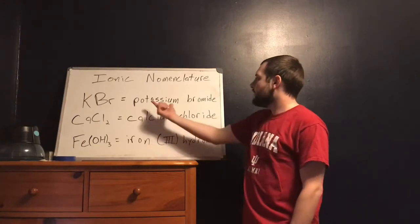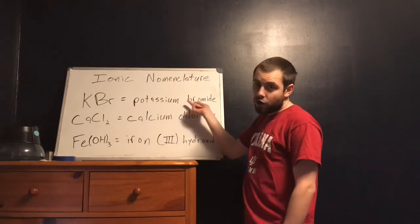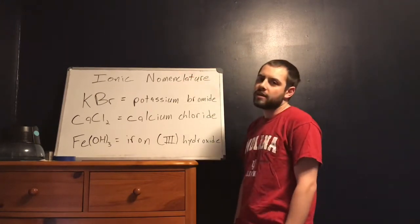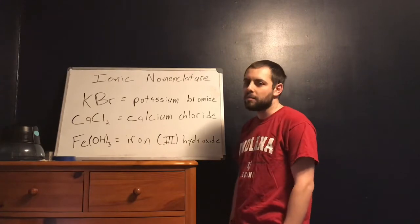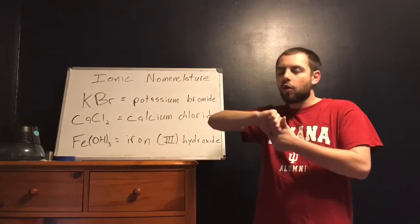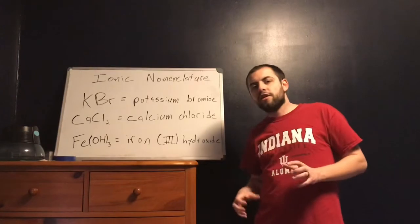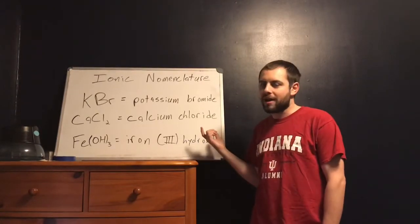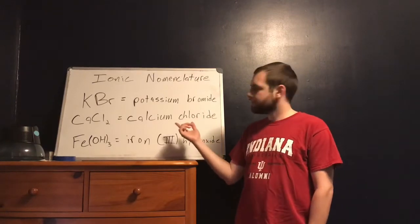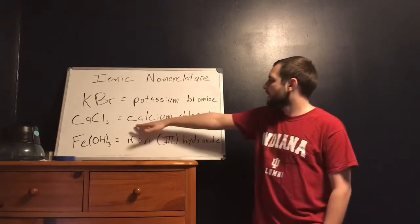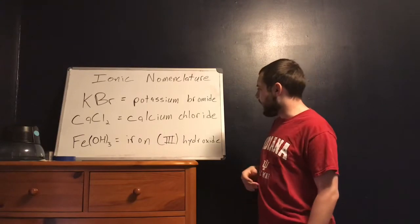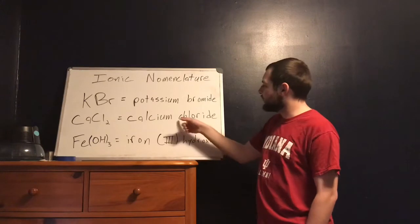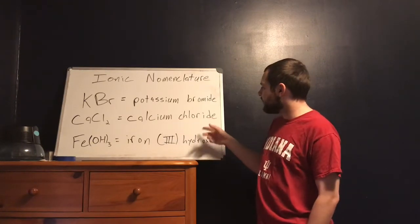If this had been potassium monobromide — if I had put a mono prefix right here — that would have indicated that this is a covalent compound, that it's not the opposite charges holding it together but rather shared electrons. It doesn't say monobromide, it just says bromide. So I know it's ionic. This next one: calcium chloride. I know it's got calcium and chlorine. It doesn't say dichloride, so I know it's ionic.